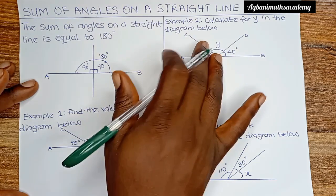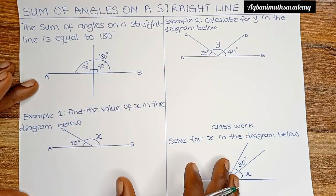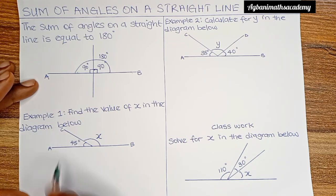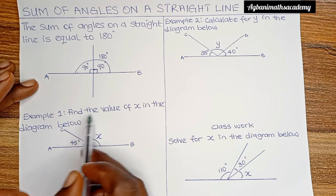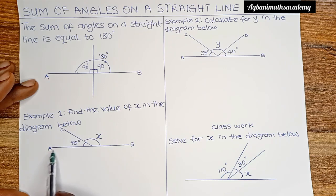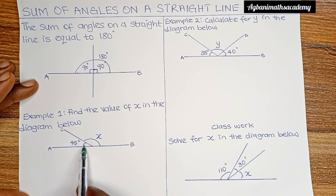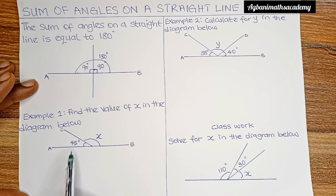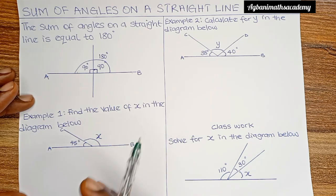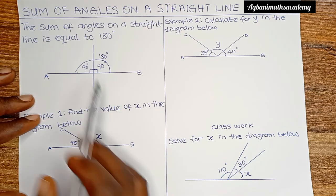This principle will help us solve problems. We are going to solve two examples together, and at the end of the video I'd like to see the answer to the challenge question in the comment section. For the first one, we are told to find the value of x in the diagram below. We are given a straight line and told to find x, knowing that one angle is 45 degrees.